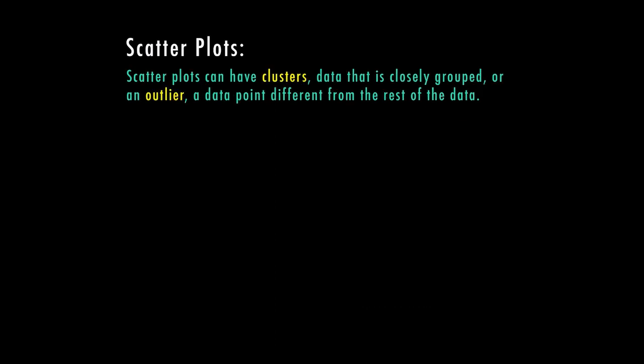So let's look at some ways that we can interpret these scatter plots. Scatter plots can have clusters, that's data that is closely grouped, or an outlier, which is a data point different from the rest of the data.